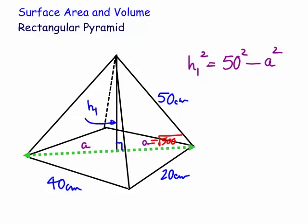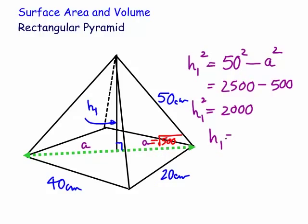A squared is 500, so H1 squared equals 2500 minus 500, which equals 2000. Therefore H1 is equal to the square root of 2000. That's a positive height — we're not worrying about the negative square root, as heights are positive. So H1 equals the square root of 2000.